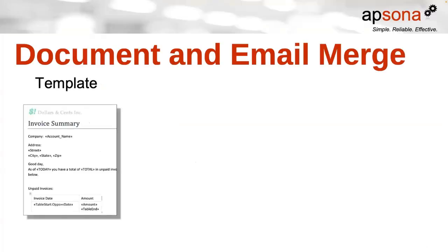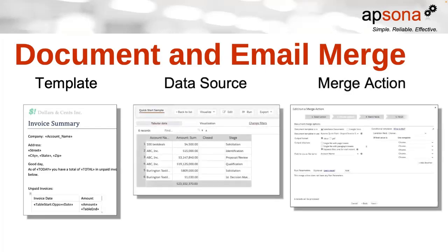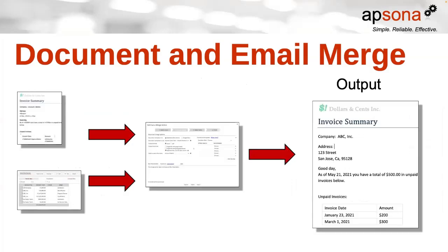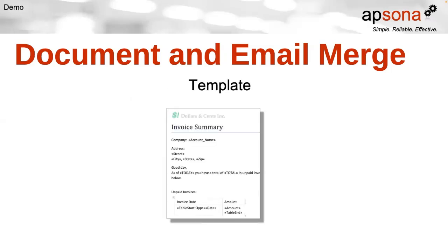Our document and email merge tool requires three major components: a template, a data source, and the merge action itself. When we combine the template and the data source through our merge action, the output is a completed merge document. Today's use case is a year-end tax receipt. Our goal is to produce one letter per household, and within that letter we want to include all the household's donations from last year.